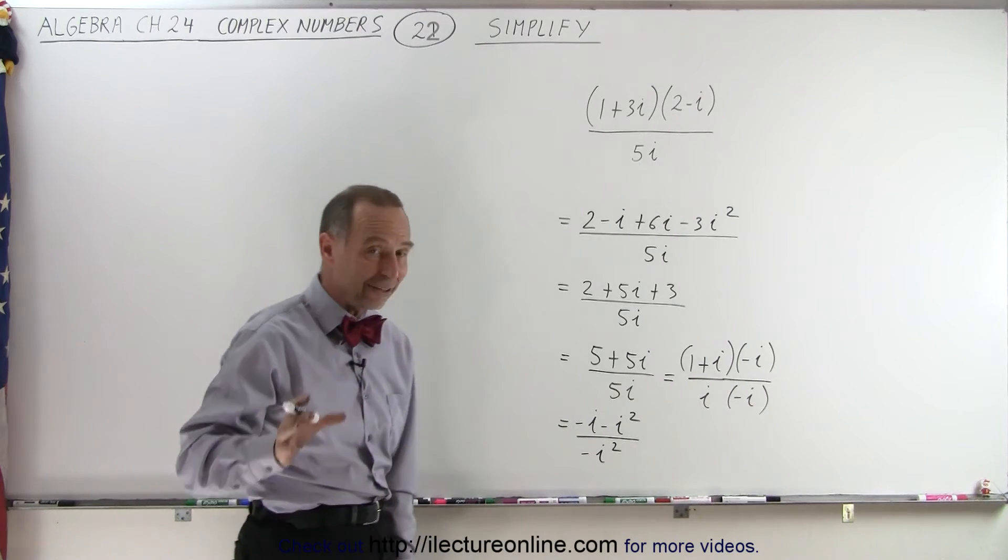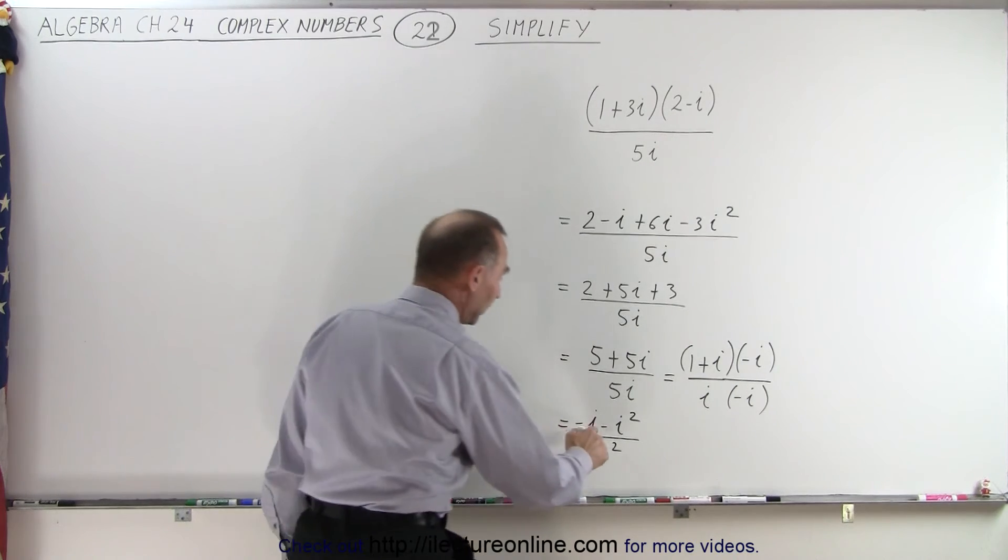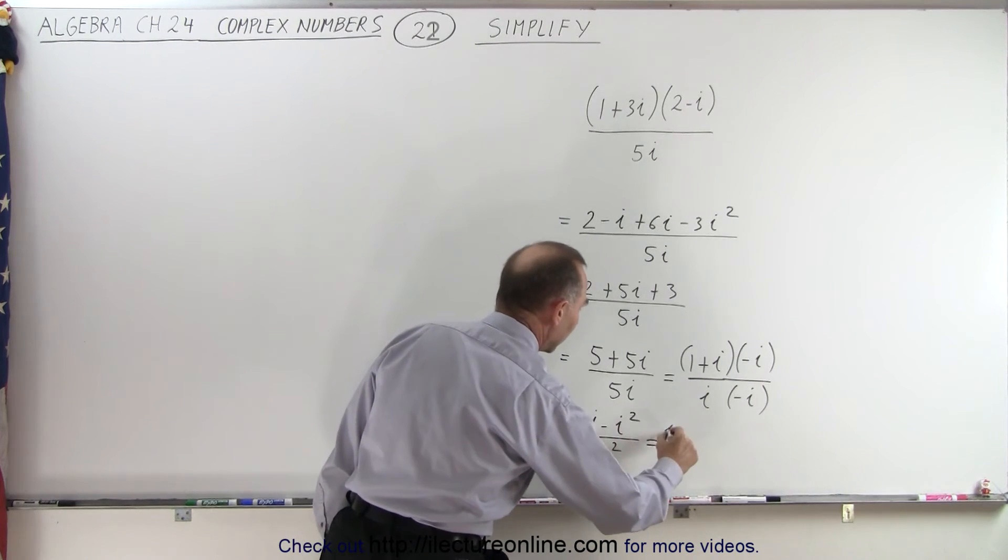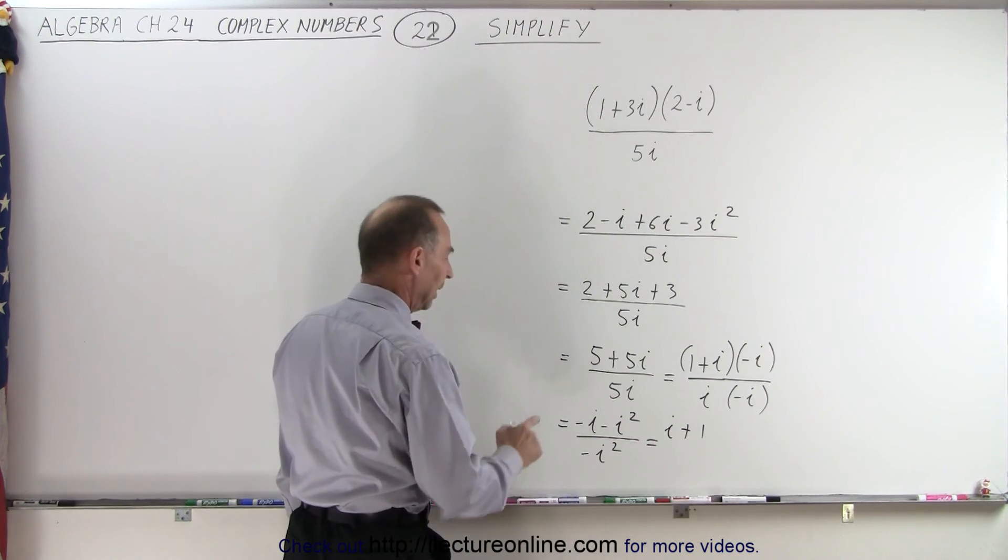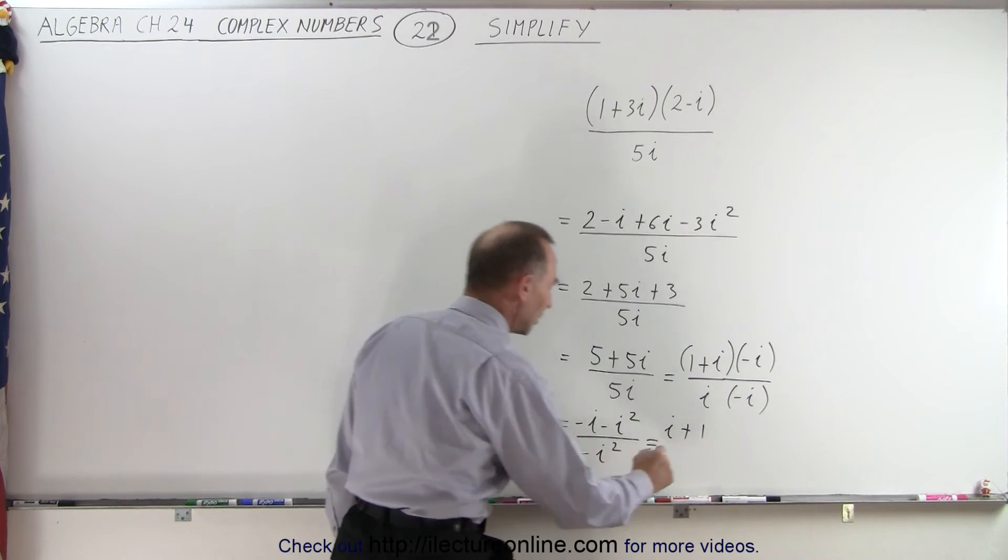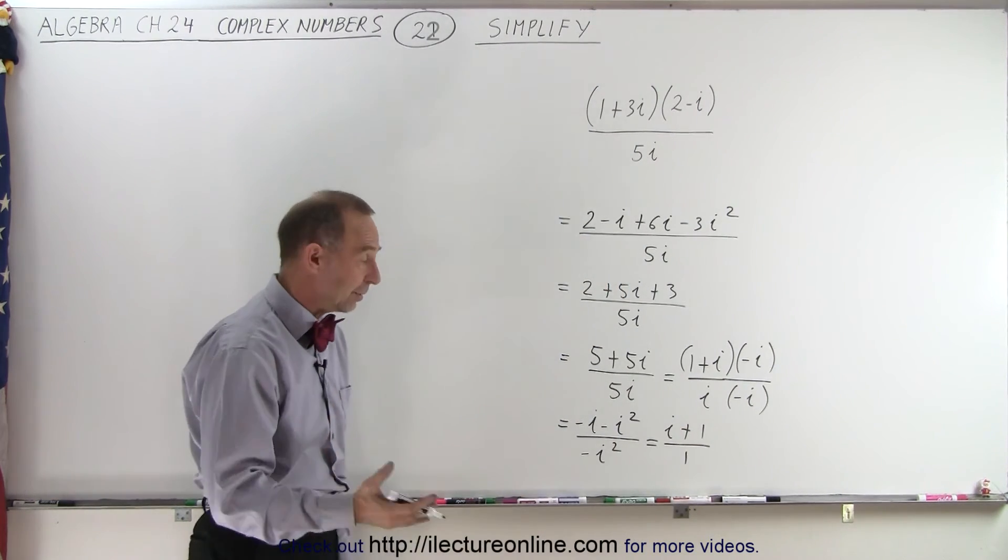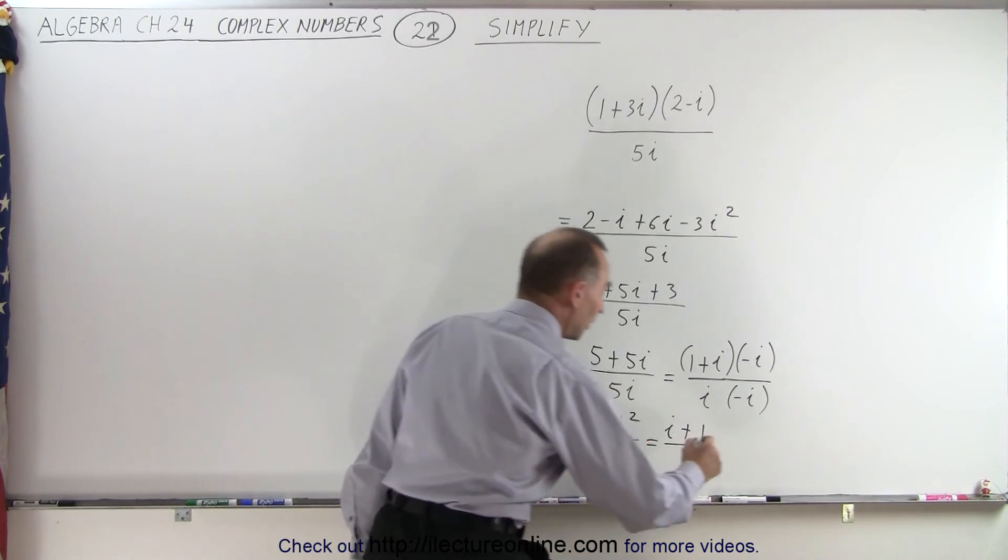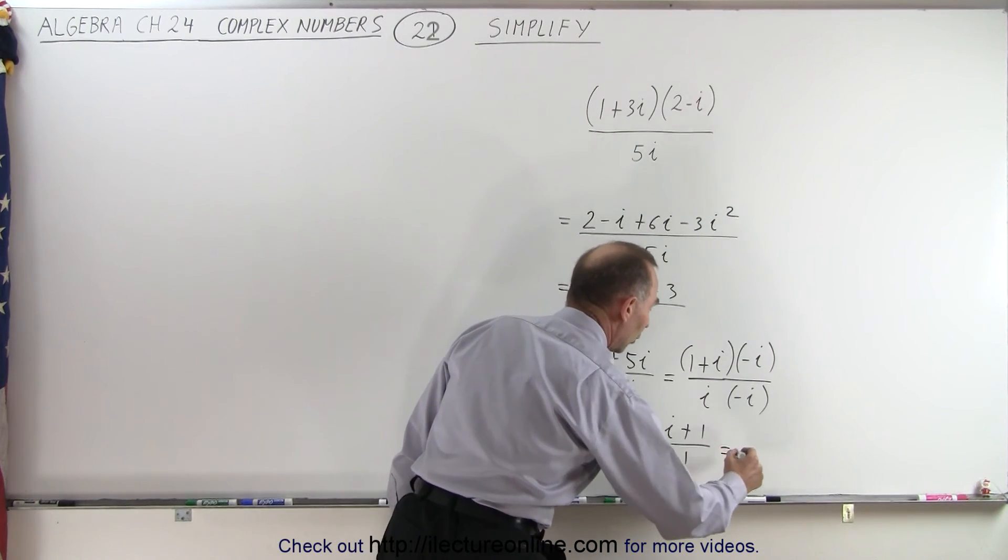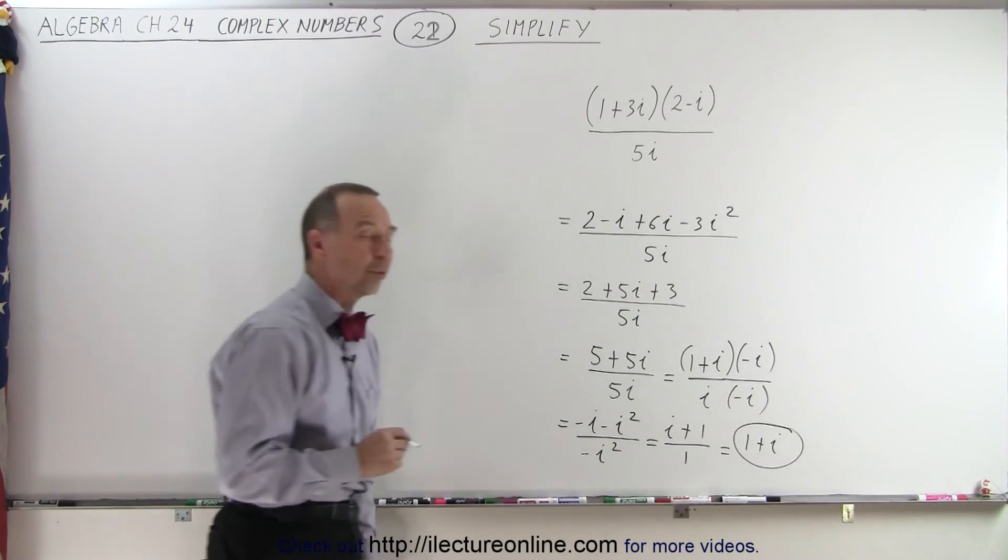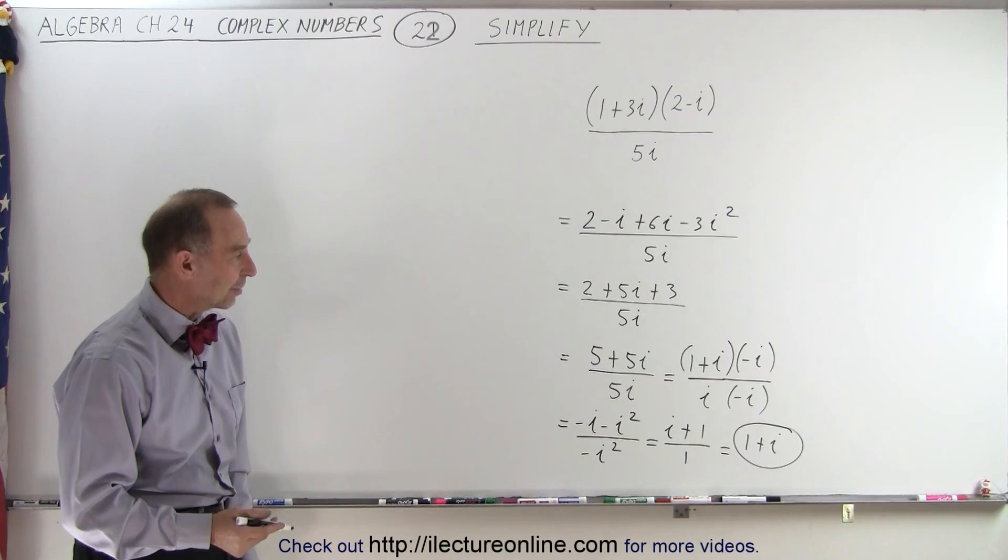Now I realize that i squared is a negative 1, so negative 1 times negative 1 is a positive 1. So this becomes negative i plus 1, and in the denominator, negative times the negative becomes positive, which is simply 1, which means that the denominator can simply disappear, and we end up with negative i plus 1 or 1 plus i, because we like to write the real part first and the imaginary part last.